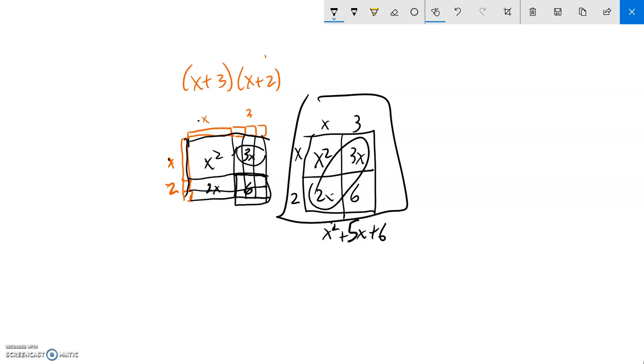This is called a generic rectangle, and it's called generic because it's not specific. Like this is specific, it shows you every little piece. Generic is just generic, we're just going to use the numbers. So what I want us to do is to start shifting away from this real concrete model to this generic model.